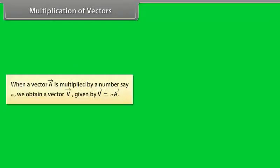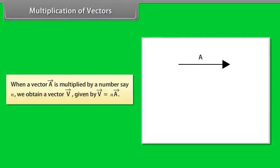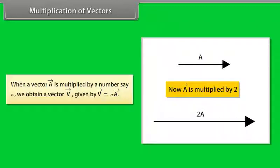Multiplication of vectors. When a vector A is multiplied by a number say n, we obtain a vector V given by V vector equals N into A vector. Let's take an example. If a vector A is multiplied by 2, the resultant vector 2A vector is in the same direction as A vector and has a magnitude twice of A vector.